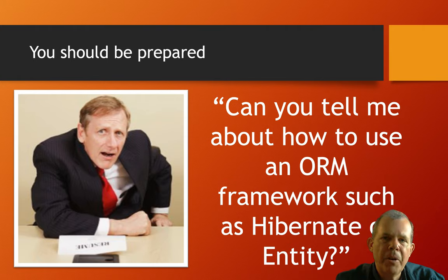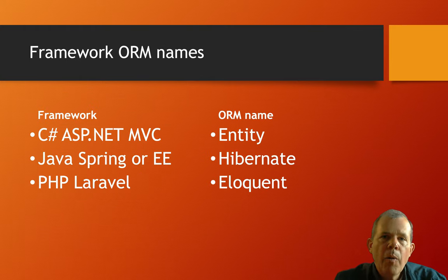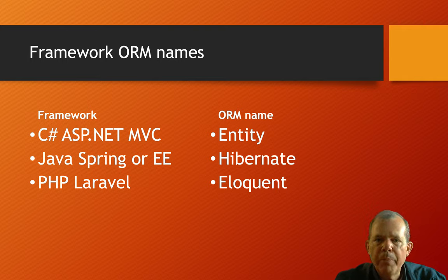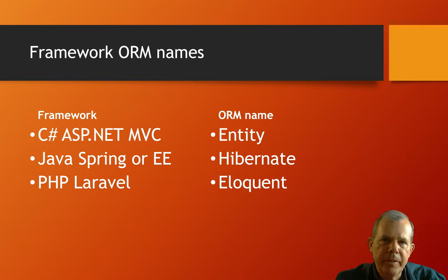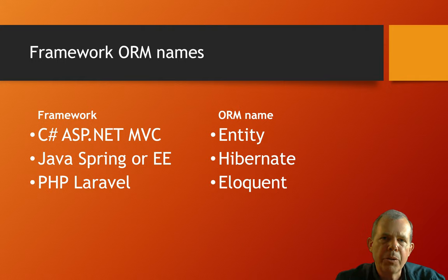ORMs come with many names. If you're working with C#, you'll be talking about the Entity Framework. In Java, the word is Hibernate. And if you happen to be using PHP, Eloquent is the object mapper you'll be using. There are other frameworks and types of ORMs, but these are three you might come across as a student at Grand Canyon University.